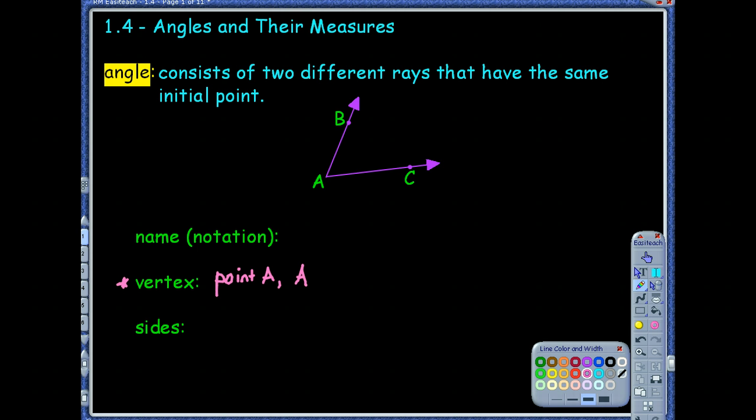Now to name the angle, once I know where the vertex is, I'm going to always make sure that that vertex is in the middle of my naming. So I could call this angle BAC or angle CAB. And it's important to always list a point that's on each of the rays, but always making sure that that vertex is in the middle.